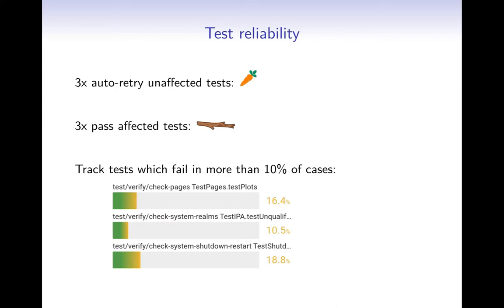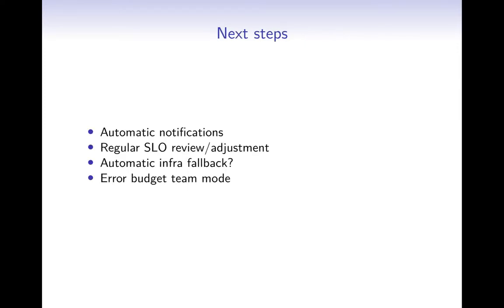So where are we now? I'm pretty happy overall. In our last team poll, everyone said they don't feel blocked by or scared of pull requests and tests anymore, and productivity and turnaround is really good right now. The main missing thing is that we need to add notification or escalation from Grafana when budgets are decreasing too close to the limit. Right now it's just me looking at these graphs every now and then. Another important point is that we need to regularly review and adjust these objectives to our current feeling of happiness.